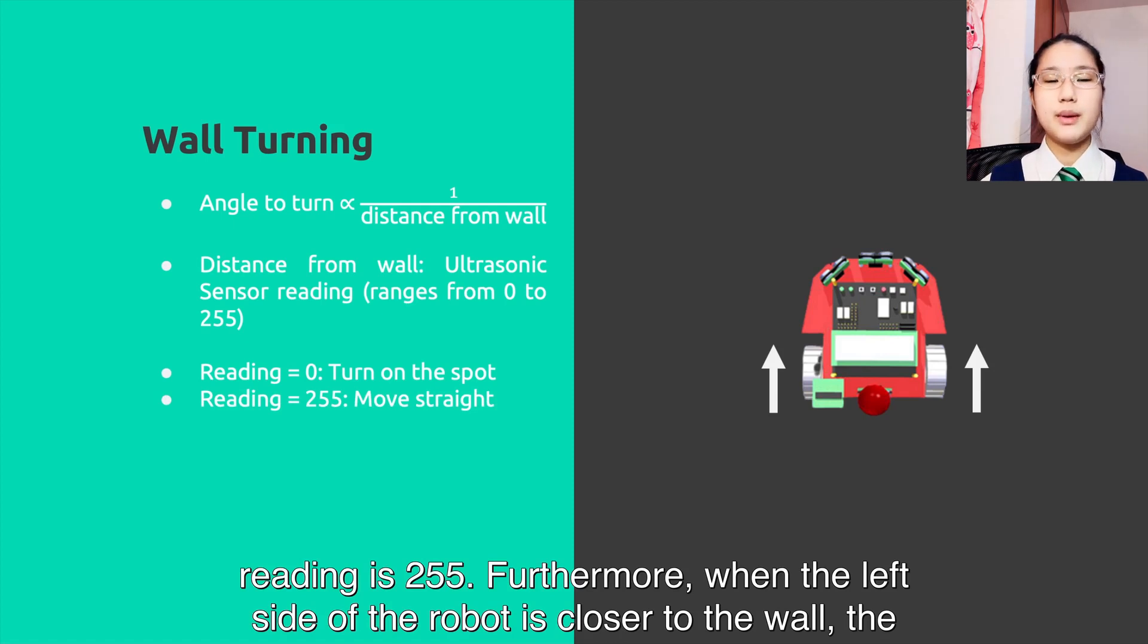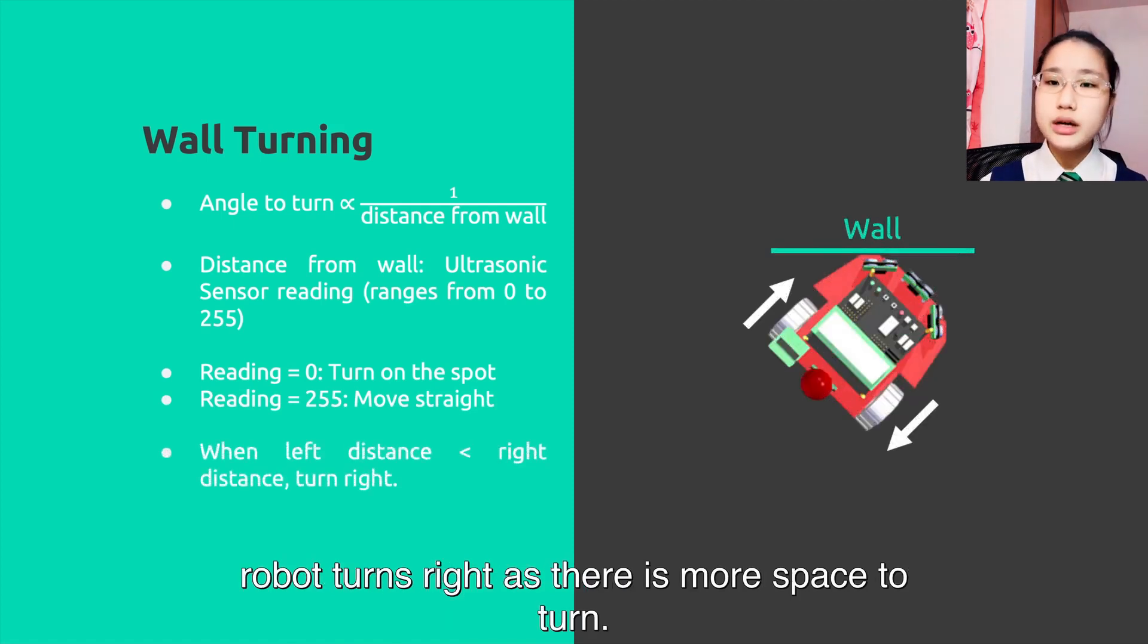Furthermore, when the left side of the robot is closer to the wall, the robot turns right as there is more space to turn.